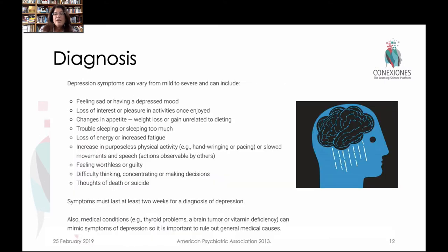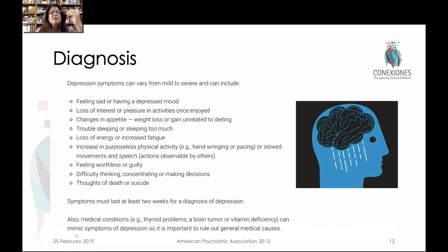So how do we diagnose depression? Because we haven't nailed down the chemicals involved, you just can't do a blood test and say you look depressed. Basically, diagnosis is done through interviews and the observation of certain symptoms. For example, a person relates that they're feeling sad or they feel like they have a depressive mood state.